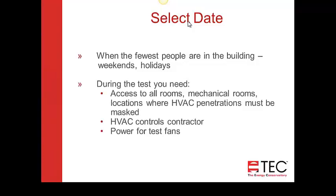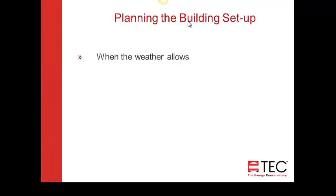When selecting a date and time, during the test you'll need access to all the rooms, though some won't be accessible for security reasons. You'll need access to the mechanical rooms and locations where HVAC penetrations need to be masked — typically attic access and mechanical rooms. Sometimes weather is an issue. You don't want to be trying to do sealing on the exterior in inclement conditions — if it's pouring rain, or cold and windy. As the test date approaches, set a date when the weather will be manageable.